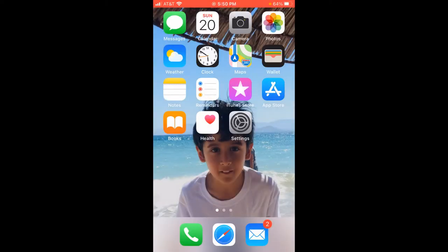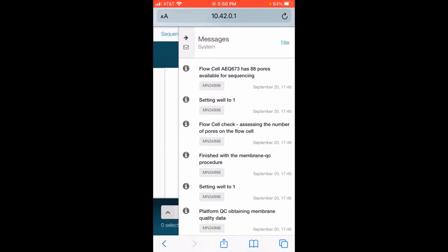It turned out that I clicked on the messages and it says it has 88 pores that are available for sequencing. It also said that it didn't meet the temperature but it went ahead and went through with the process. So we've got 88 pores at this step and the flow cell is ready to go.